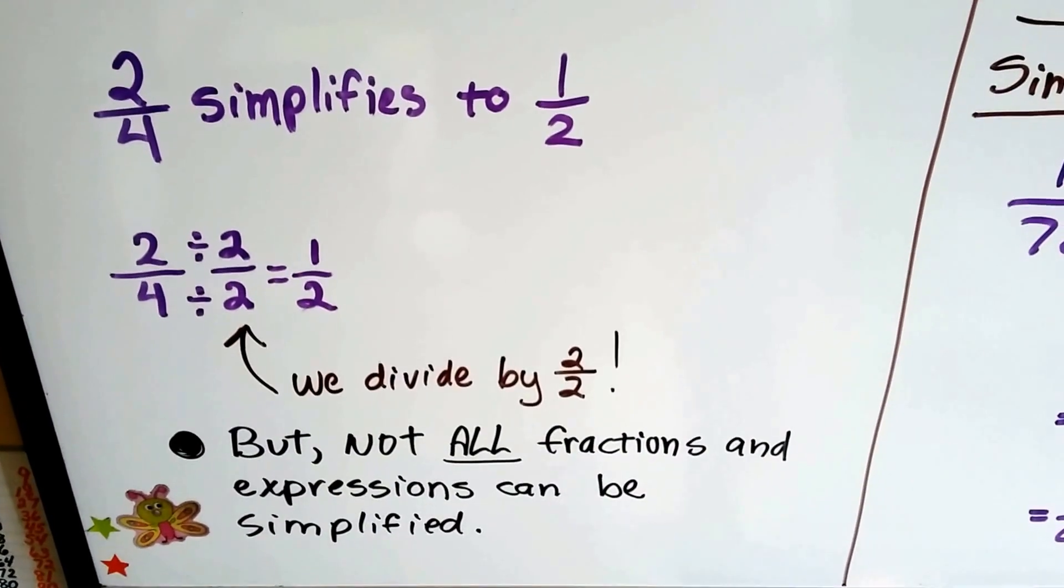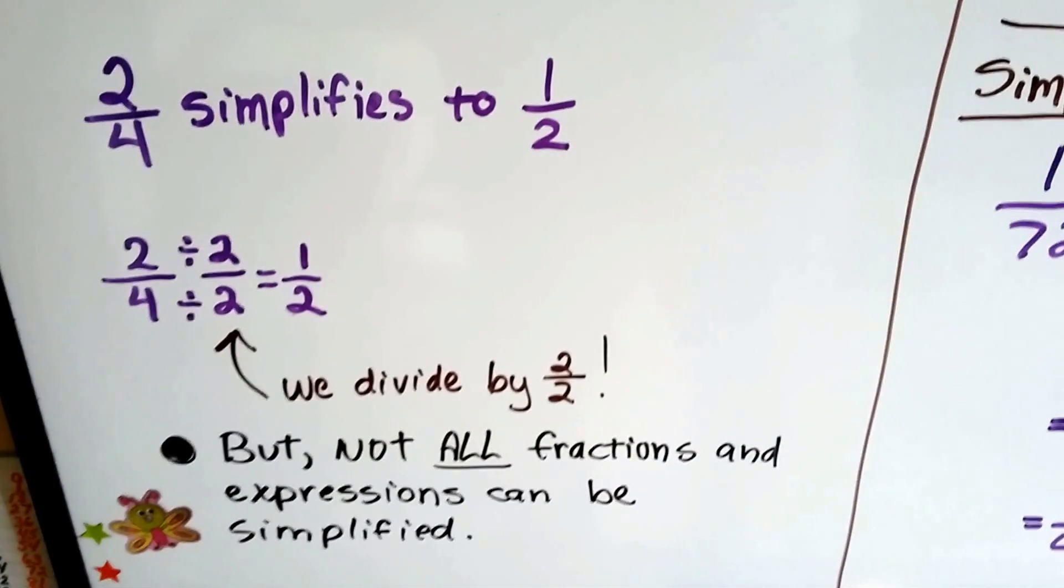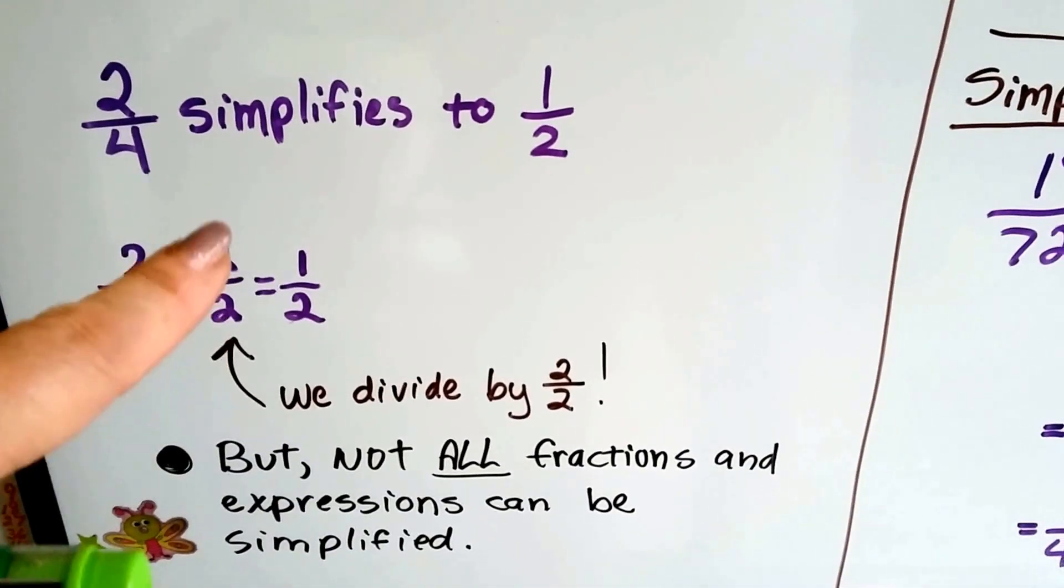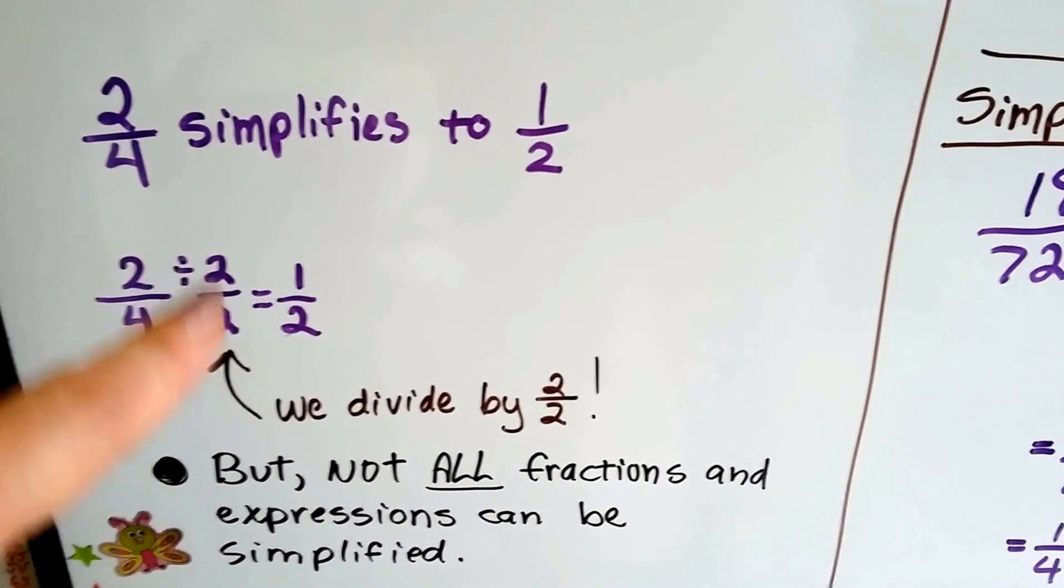2 divided by 2 is 1. 4 divided by 2 is 2. So see how we divided by 2 over 2? It's like identity property, isn't it? It's just a 1.